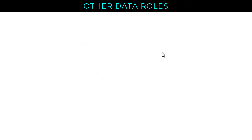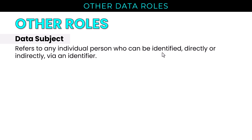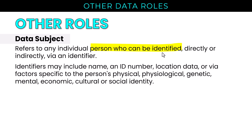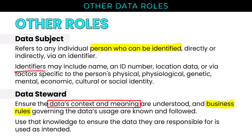Two other roles to be familiar with. The data subject refers to any individual person who can be identified directly or indirectly via an identifier — it's the person who can be identified. The subject is the person; the object is the data or other resource. Identifiers might include an ID number, location data, or factors specific to a person's physical, psychological, genetic, mental, economic, cultural, or social identity. The data steward ensures the data's context and meaning are understood and that business rules governing the data's usage are known and followed, using that knowledge to ensure the data they are responsible for is used as intended. Data owners often delegate some duties to this role.